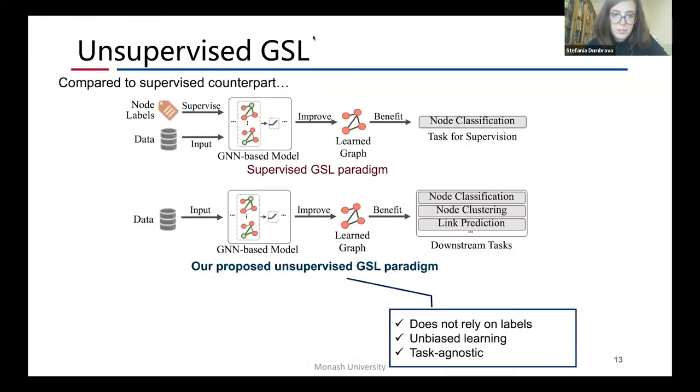Compared to the supervised counterpart, our proposed unsupervised paradigm has three advantages. First, it does not rely on label information. Second, the learned structure is unbiased. Third, the learned graph is task agnostic and the method could be freely applied to diverse downstream tasks.